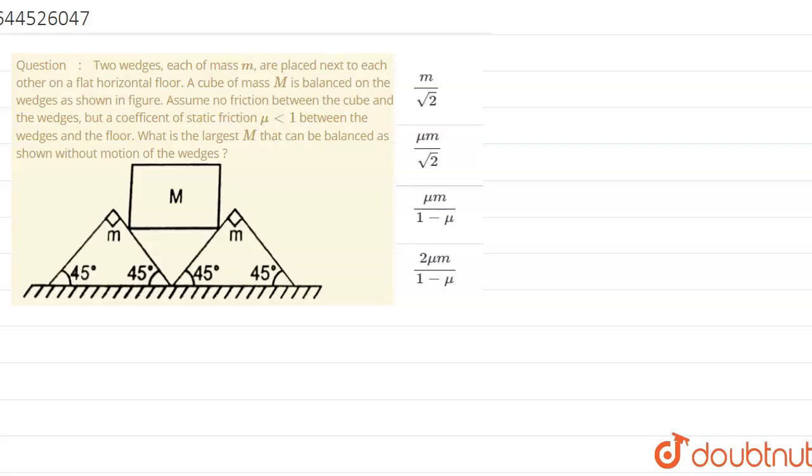We have the question that two wedges each of mass M are placed next to each other, as shown in the figure in the question, placed next to each other on a flat horizontal floor.